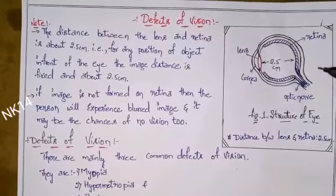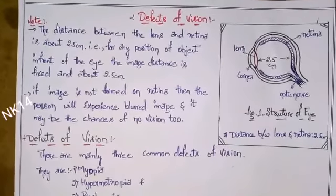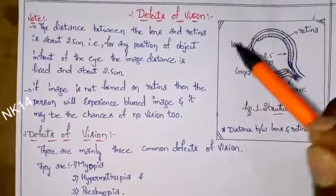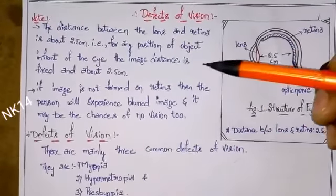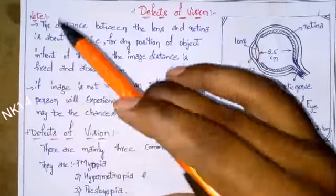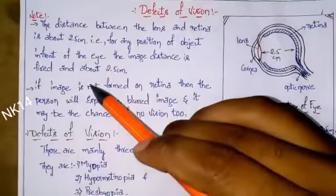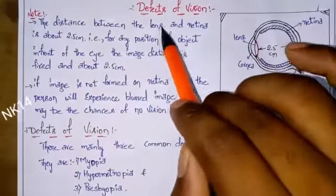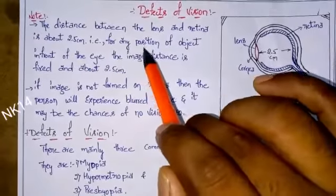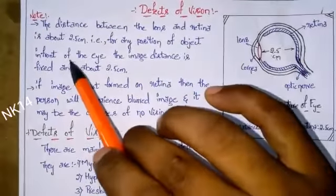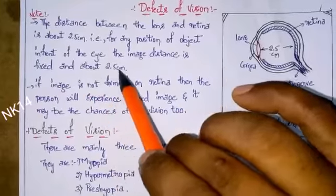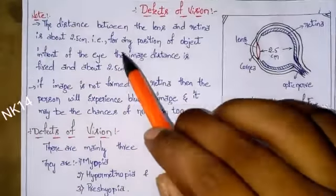Let's start our topic: defects of vision. An important point before starting — the distance between the lens and retina is about 2.5 centimeters. That means for any position of the object in front of the eye, the image distance is fixed at about 2.5 centimeters.